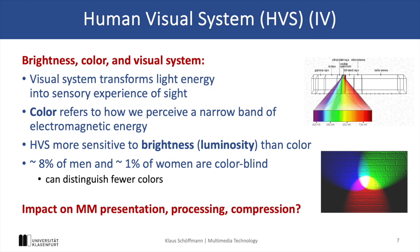Brightness, color, and visual system processing are key components of how we perceive the world. The human visual system transforms light into sensory experiences. Brightness, also called luminosity or luma, is how sensitive the human visual system is to light intensity, and it is more sensitive to brightness than to color. Interestingly, about 8% of men and 1% of women are colorblind. Understanding how the human visual system processes brightness and color allows us to optimize media presentation, processing, and compression in multimedia technology.